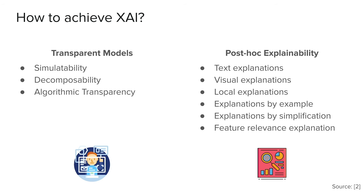Currently the most accurate models for many real-world problems are based on neural networks, but they are hard to explain. We would like to shift them further along the explainability axis. Achieving explainable AI can be done either by having a transparent model that we can simulate, decompose, or that is transparent algorithmically by definition, or — what we do most of the time with neural networks — by getting post-hoc explanations after training, through text explanations, visual explanations, or explanations by example or simplification.